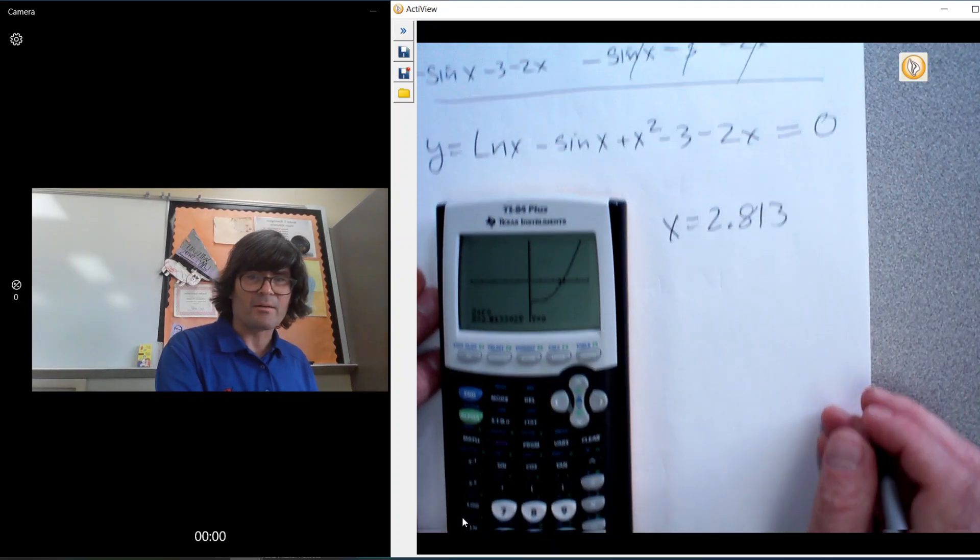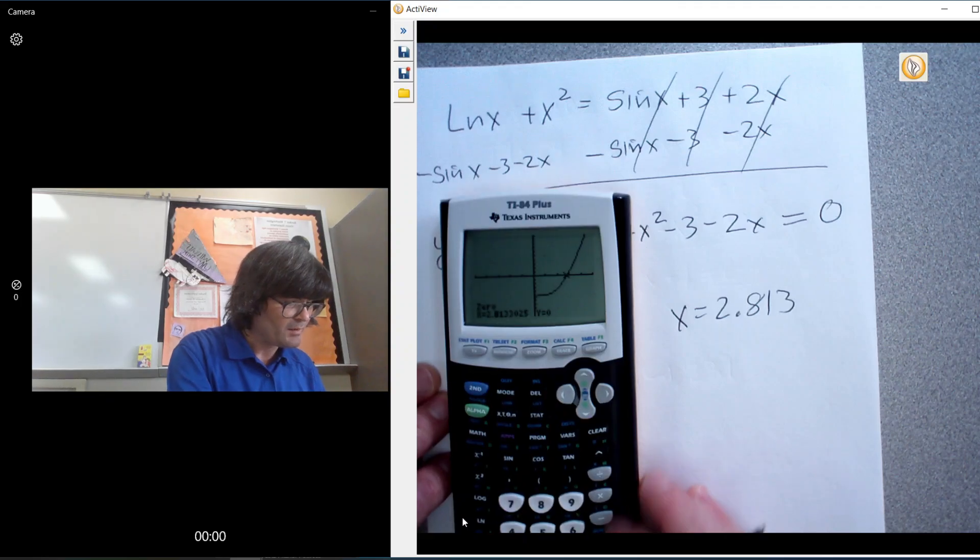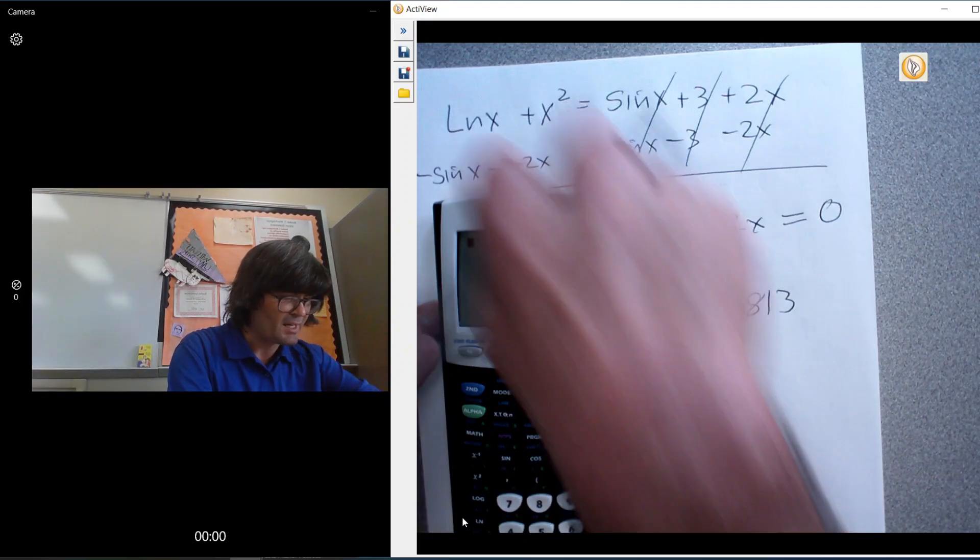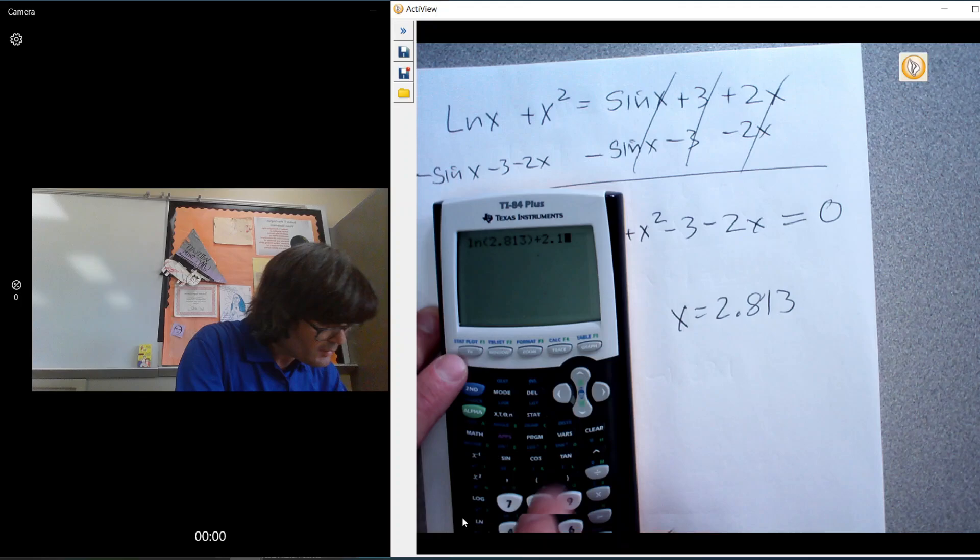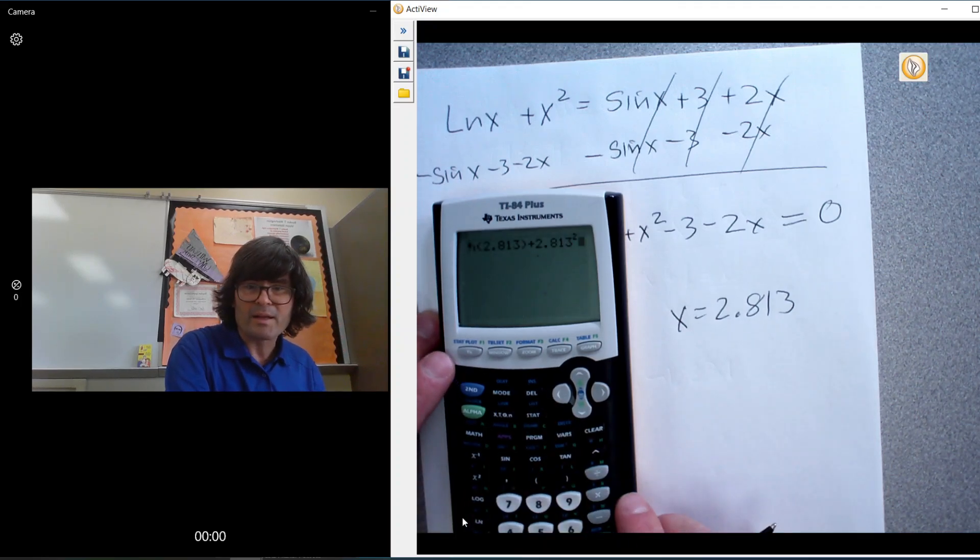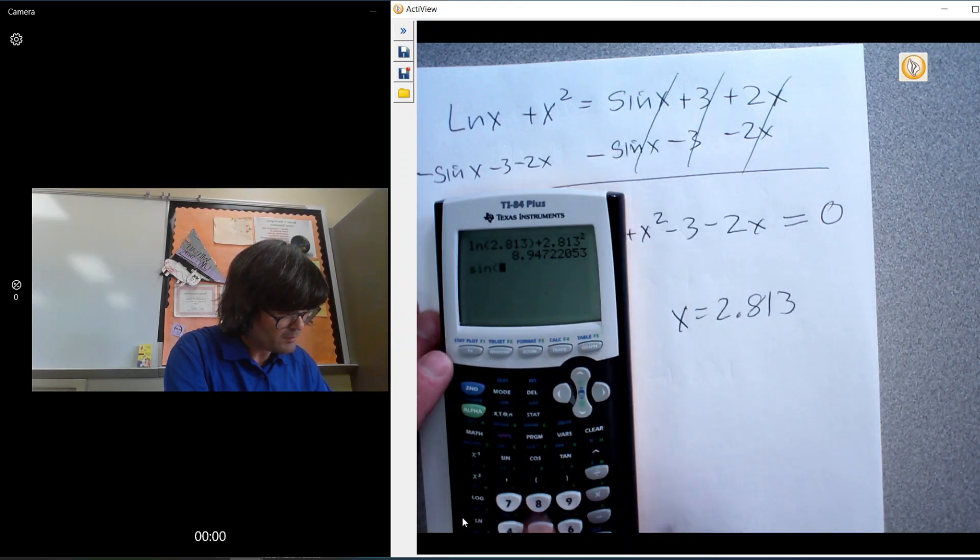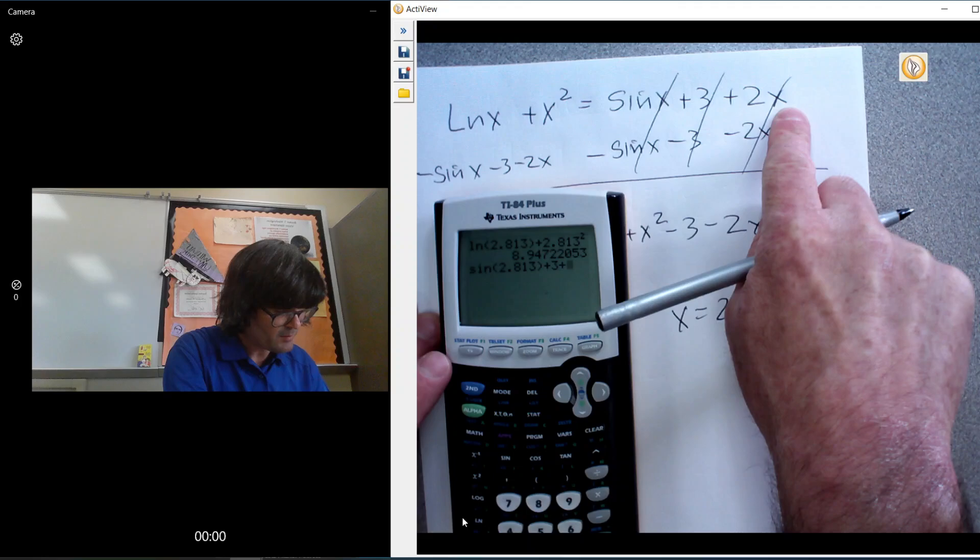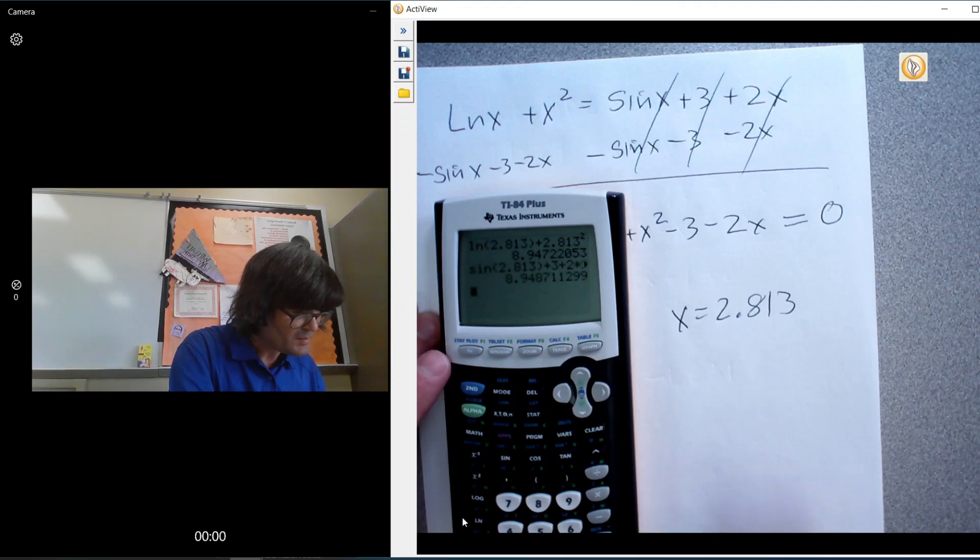And let's check it now. Let's go back up. I know I crossed some stuff out, but you can still read it. Let's just check and make sure that makes this side equal to this side. Natural log 2.813 plus 2.813². That's the left side. And then sine of 2.813 plus 3 plus 2 times that gives you the same number.